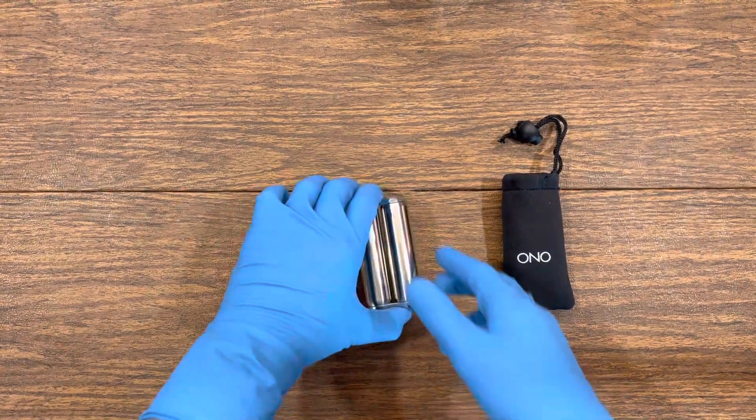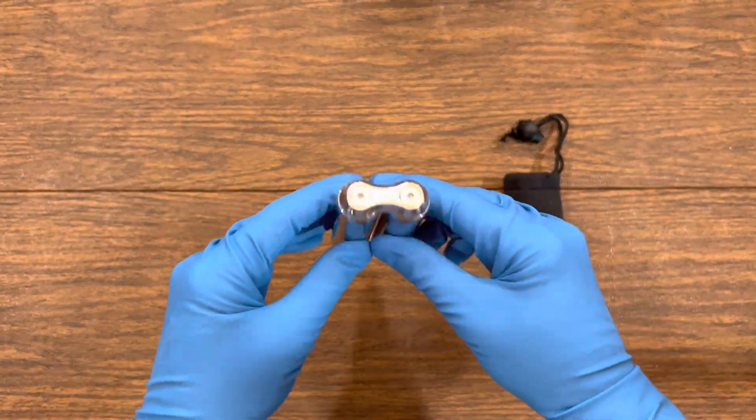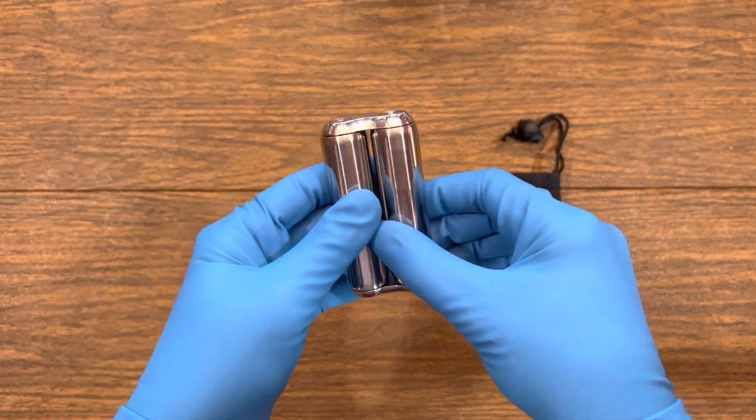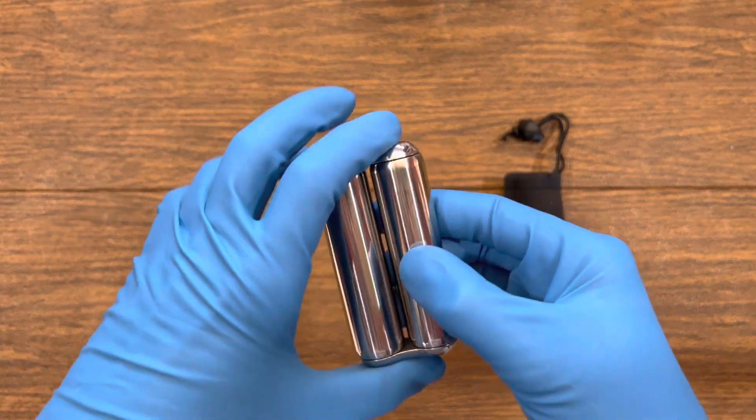It's fidget factor time! F is for flexibility. The Ono Roller is a single assembled piece with two rotating cylinders.